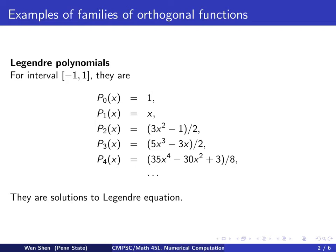So on the interval for x from negative 1 to 1, these polynomials are defined as following. So P0 is 1, P1 is x, P2 is 3x squared minus 1 over 2, and P3 is 5x cubed minus 3x over 2, and so on and so forth.